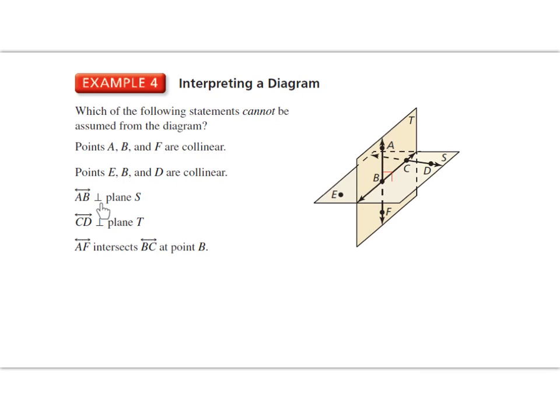We've got line AB perpendicular to plane S. So here we have line AB. Here's plane S, the lighter shaded plane. And I do see a right angle symbol right there, which does communicate it's perpendicular to the plane. So that's true.